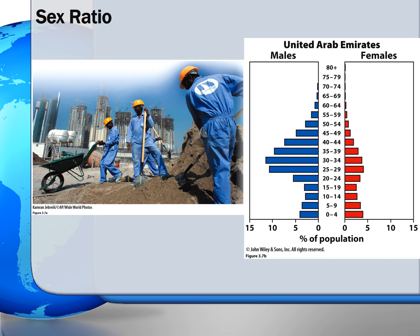There are many factors that contribute to the imbalance of the normal ratio. Females naturally live longer than males, and males have a higher mortality rate due to war. On the flip side, some countries, like India and China, have higher sex ratios due to a strong cultural preference in these countries for males. Immigration can also affect sex ratios in a given country.